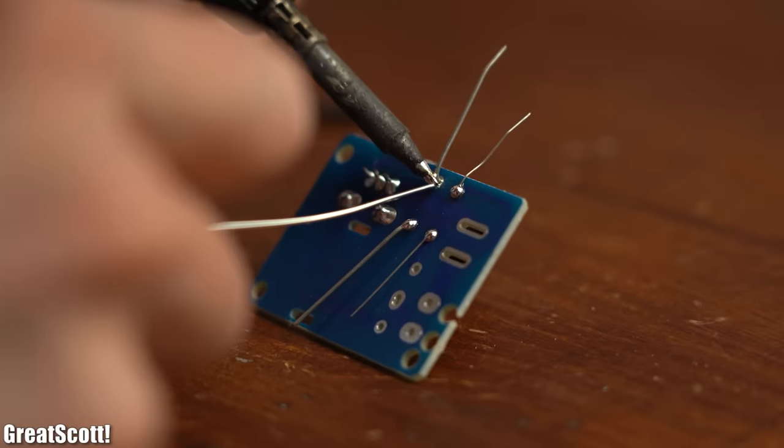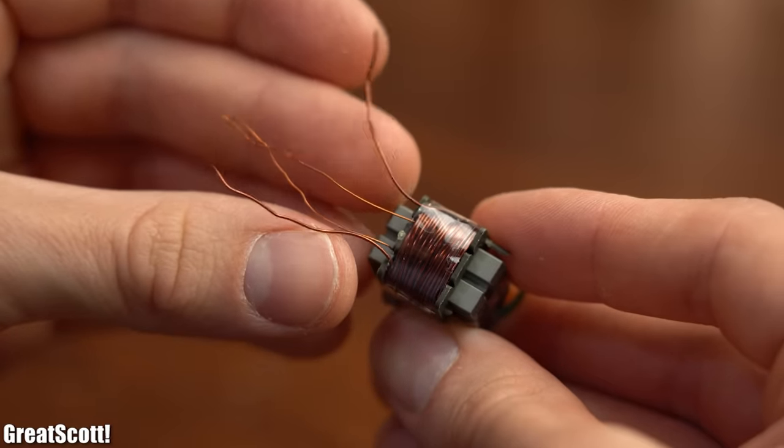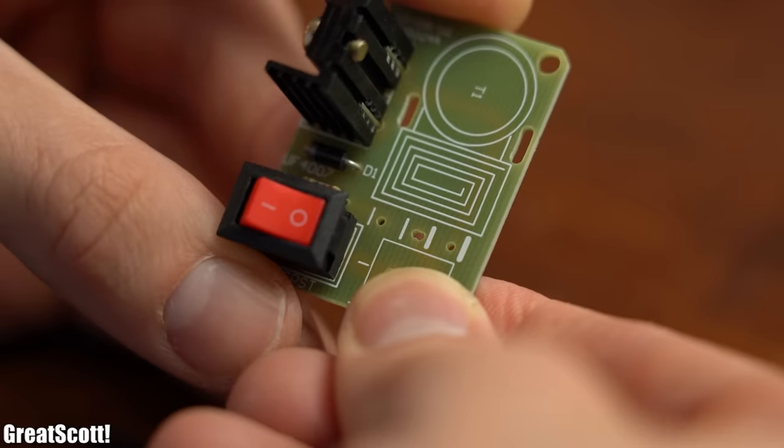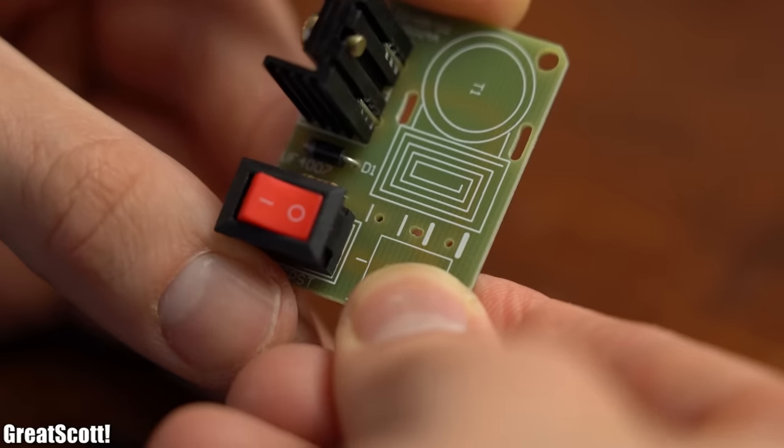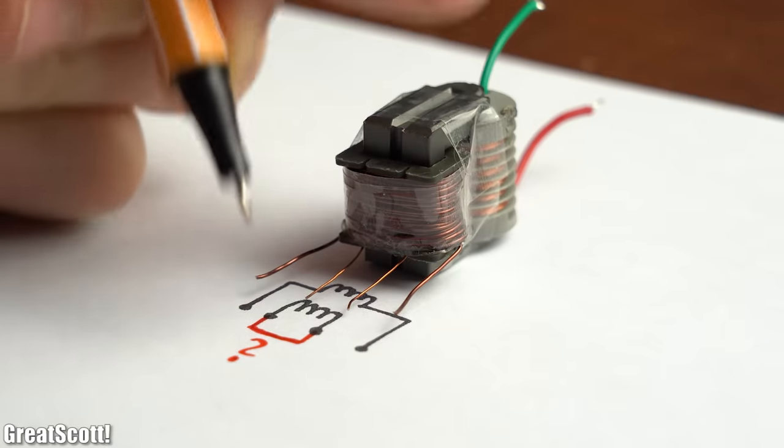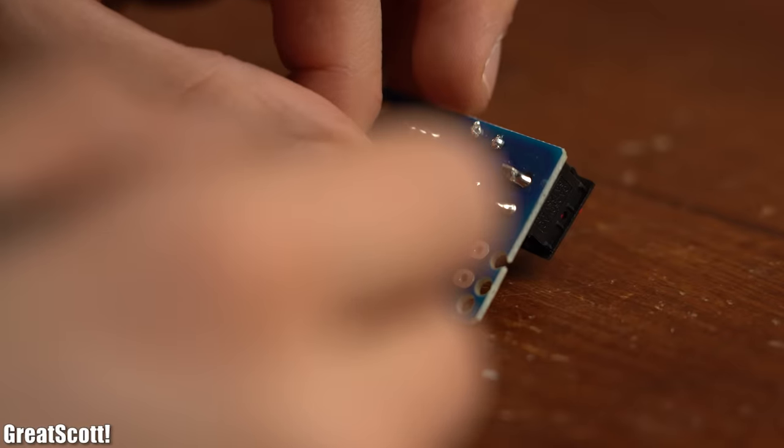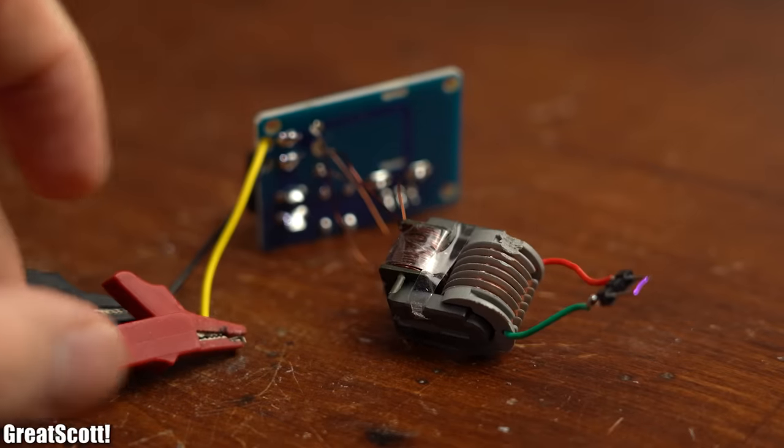So after soldering all the obvious components into place I got to the two primary windings. Now the markings of the PCB made it look like I had to short the two inner wires but that would have definitely not made any sense. So I did a small test with my interpretation of how to hook things up and that worked flawlessly.